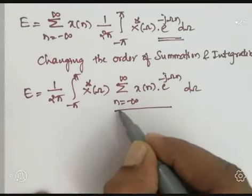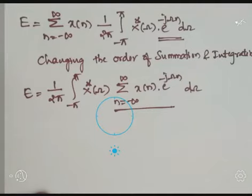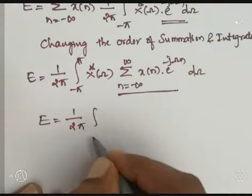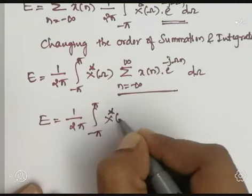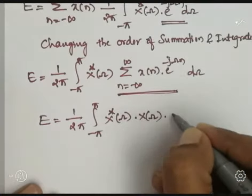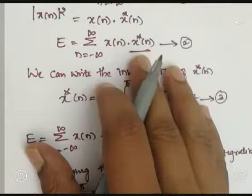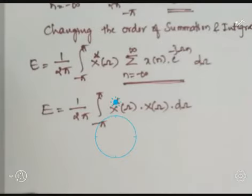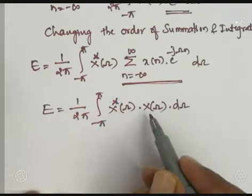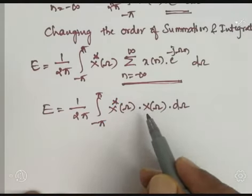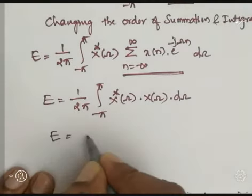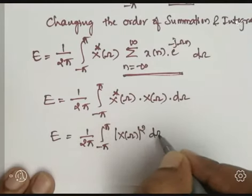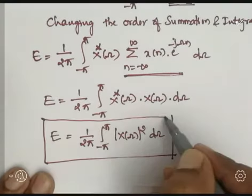We can observe that the inner summation — summation n equal to minus infinity to plus infinity, X of n e to the power minus j Omega n — is nothing but the DTFT definition, which equals X of Omega. So this is replaced by X of Omega. Therefore, E equals 1 by 2 pi, integration over the limits minus pi to plus pi, complex conjugate of X of Omega multiplied by X of Omega, d Omega. Just as mod of X of n whole square equals X of n times its complex conjugate, here complex conjugate of X of Omega times X of Omega equals mod of X of Omega whole square. Hence E equals 1 by 2 pi, integration from minus pi to plus pi, mod of X of Omega squared, d Omega.